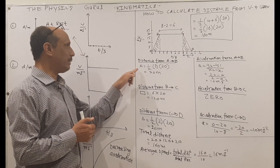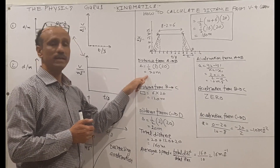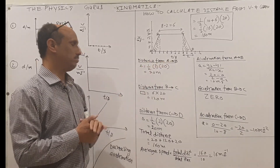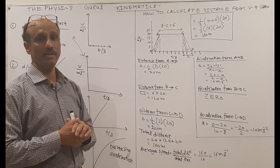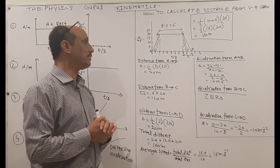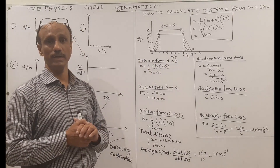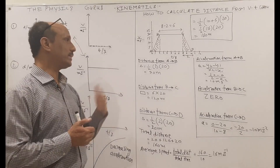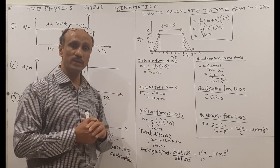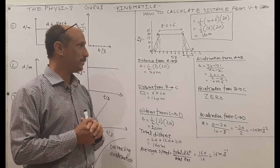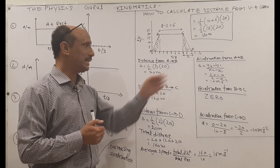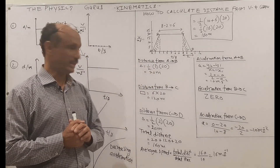This shaded region from A to B is a triangle, so I will apply the triangle area formula and get 20 meters. They may also ask for the acceleration from A to B, so I will apply the gradient formula: (y2 − y1) / (x2 − x1), and get the value 10 meters per second squared.